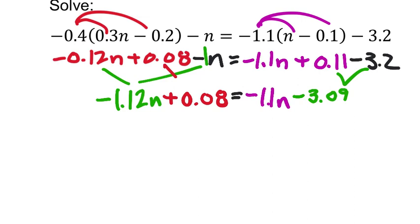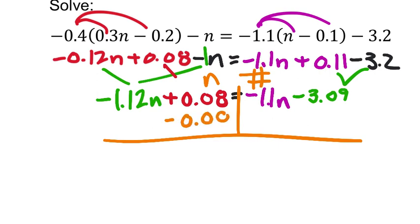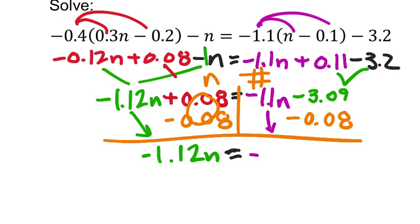So I'll do this in two steps. I know in the last couple of problems, I did it in one step, but two steps on this one. So I want to put the ns on the left and then the numbers on the right, not that you have to. But I got to zero out that 0.08, so I'll subtract 0.08. But if I do it to one side, I got to do the other side as well. So that does zero that out. I'll drop my negative 1.12n. And then negative 3.09 minus 0.08 should be negative 3.17 on that.